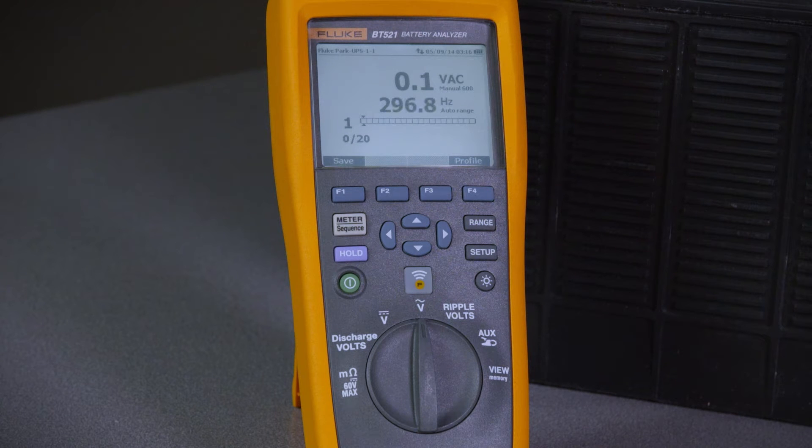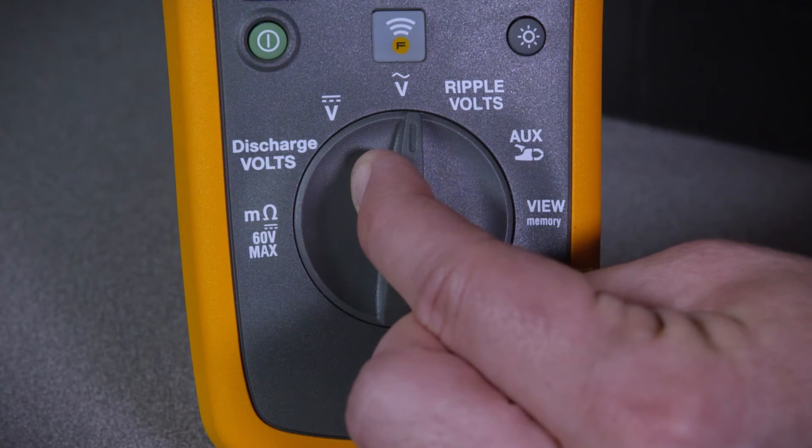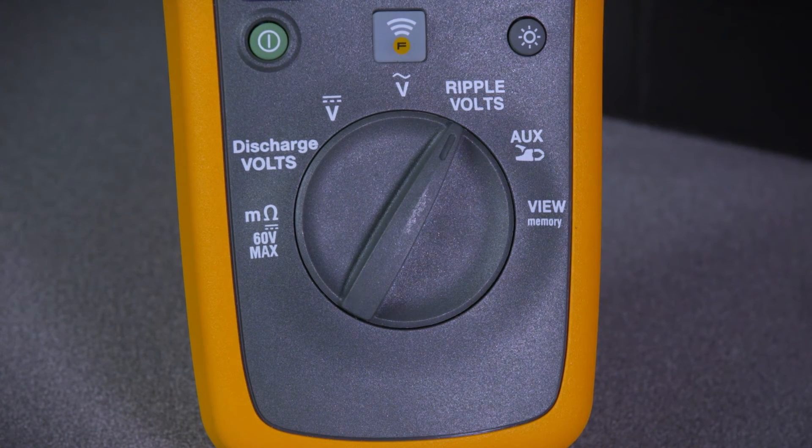The instrument can safely read up to 600 volts AC. It is safety rated at Cat 3, which ensures it can be safely used in most battery installations. The next available mode is ripple voltage measurement.